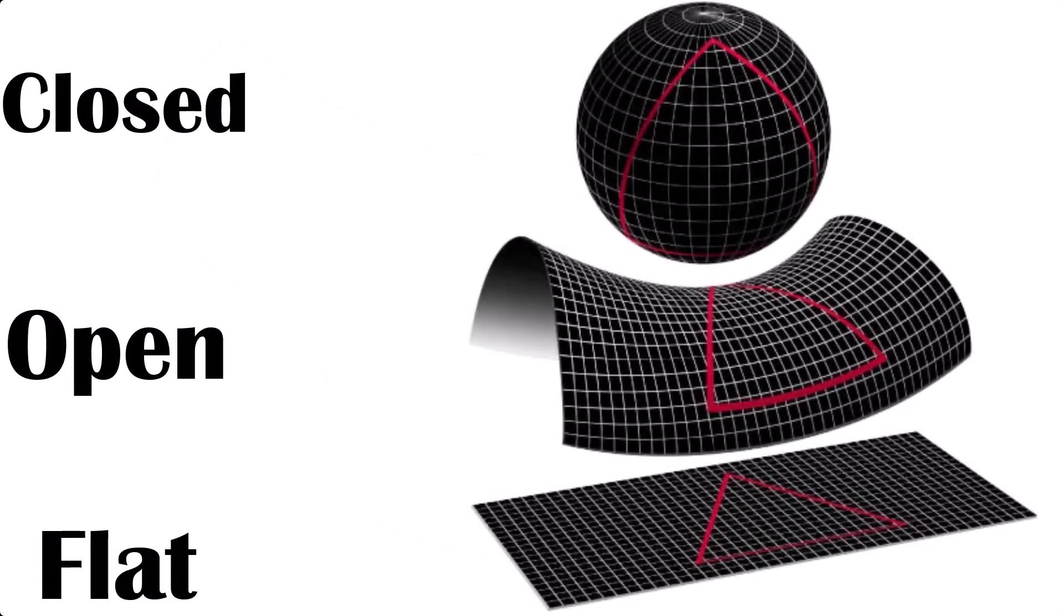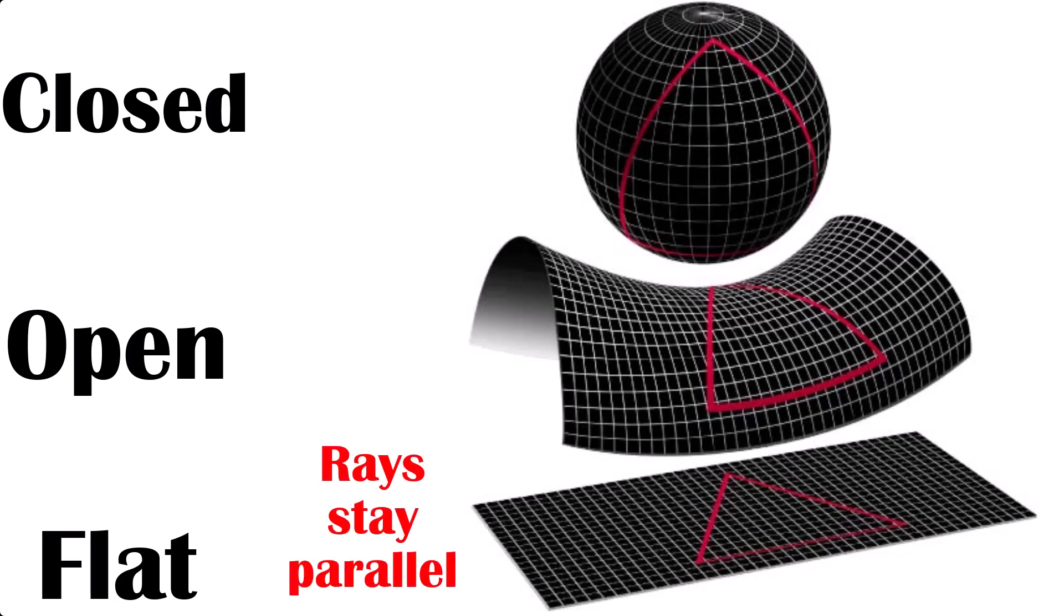For example, if you imagine 2 parallel rays of light shining forward in the universe. If it were flat, then over an infinite distance, these rays would stay parallel and never touch. Kind of boring, but that's the simplest case.